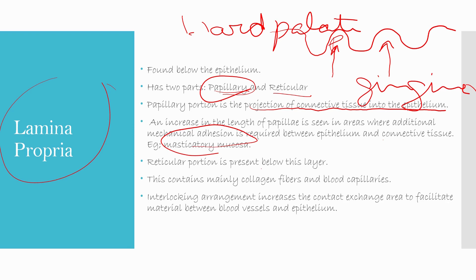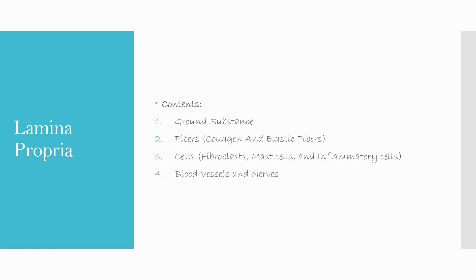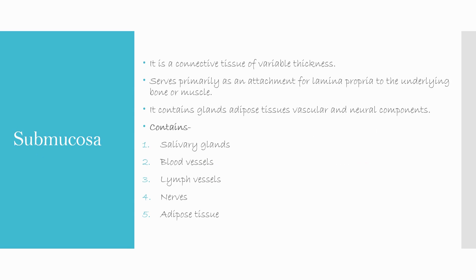The reticular portion is present below the papillary layer and contains mainly collagen fibers and blood capillaries. The interlocking arrangement increases the contact and exchange area to facilitate material exchange between blood vessels and epithelium, enhancing nutrition. Contents of lamina propria include ground substance, collagen and elastic fibers, fibroblasts, mast cells, inflammatory cells, blood vessels, and nerves.